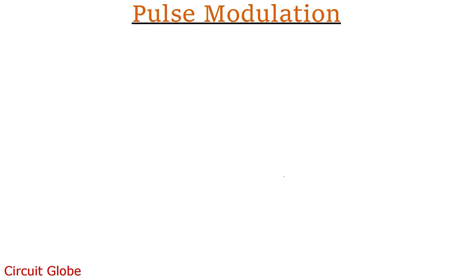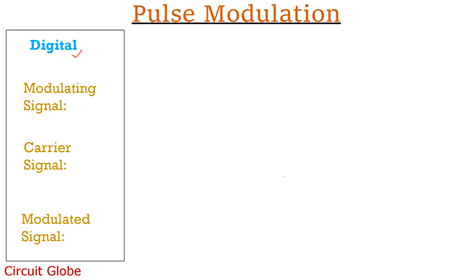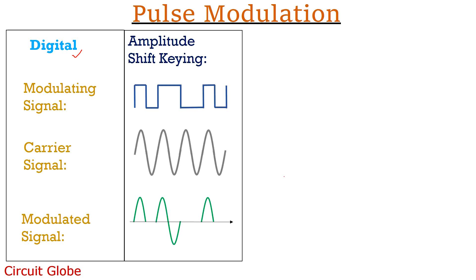Let's now see the second type of pulse modulation, that is digital modulation. In digital modulation, the message signal is in the form of pulses. The first type is ASK, which stands for amplitude shift keying. This is our modulating signal in the form of pulses, this is our carrier signal which is analog in nature, and this is the finally modulated signal. In ASK, the amplitude of the analog carrier signal is changed according to the pulsed modulating signal. The signal is present only when the digital stream is 1 or high. As the digital stream becomes low or zero, no signal is present. It is sometimes also known as on-off keying.